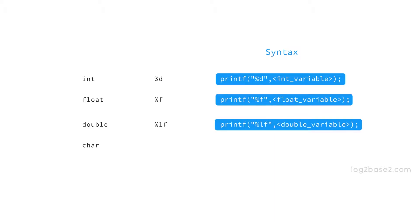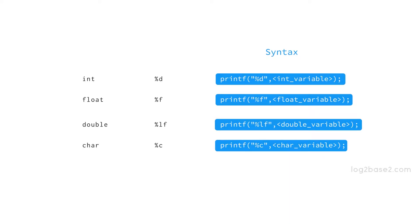Next, for character data type, we have %c, and the syntax to print a character variable is: printf("%c", name_of_character_variable).